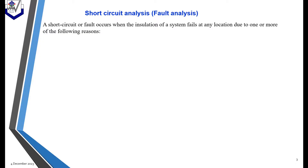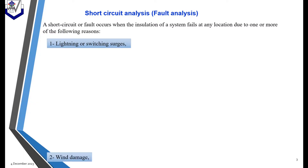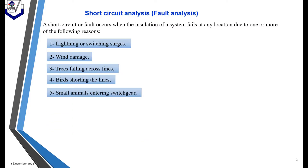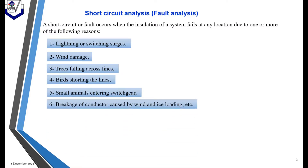A fault or short circuit occurs when the insulation of a system fails at any point due to one or more of the following reasons: lightning or switching surges, wind damage, trees falling across the line, birds shorting the line, small animals entering the switchgear, or broken conductors caused by wind or ice loading.